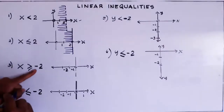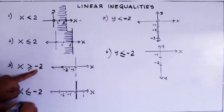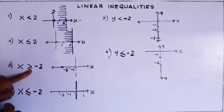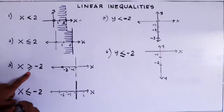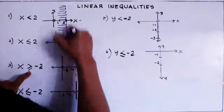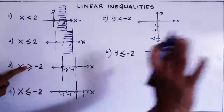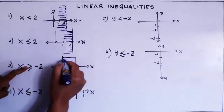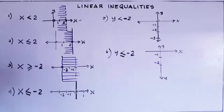Number three. We locate negative two on the x-axis. Where is negative two? Negative two is here. What should be the line — dotted or visible? It should be visible because this one has an equal sign: greater than or equal to. So we draw a solid vertical line at negative two. X is greater than, so greater is going to the right — we shade to the right.